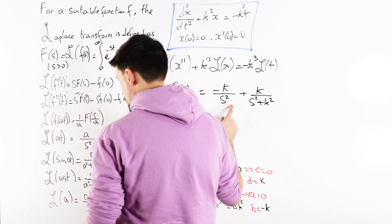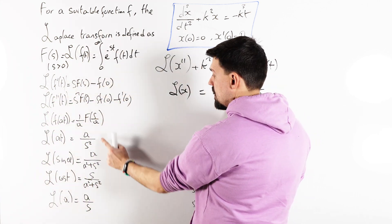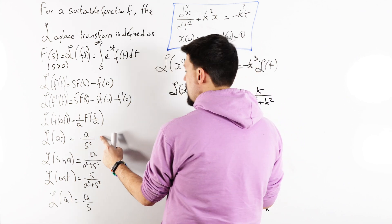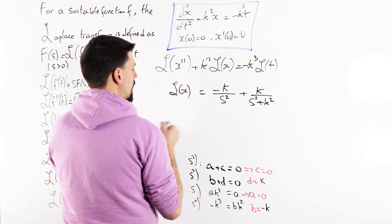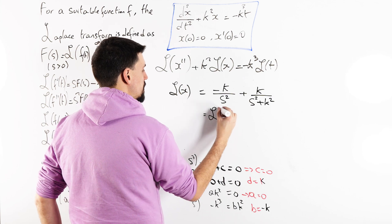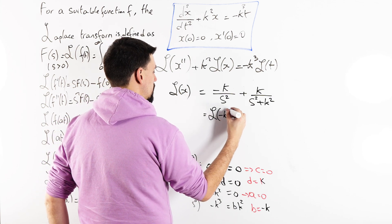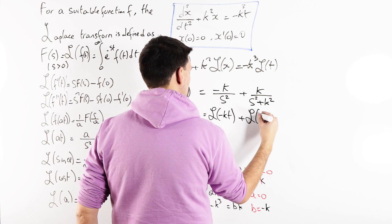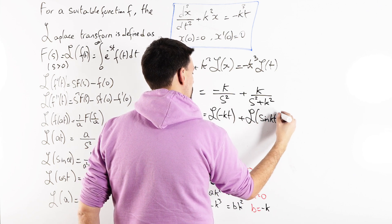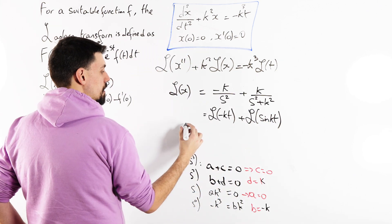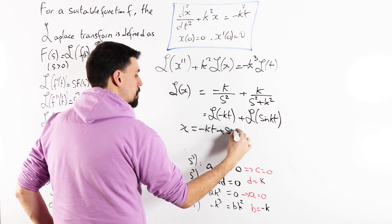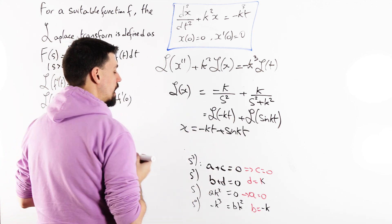Now, I could recognize this. That's here. Nope. That's here. So, if you have a look at that, that is the Laplace transformation of negative kt. And that is the Laplace transformation of sin kt. So, what that tells me is x is minus kt plus sin kt.